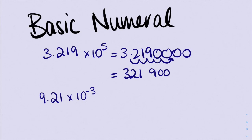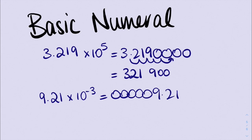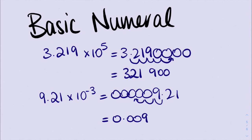And for the second one, we can see that our 10 is to the power of a negative number. That tells us we're moving our decimal place forward, so we're going to put our extra zeros out the front before we start. That negative 3 tells me I'm moving my decimal place forward three places: 1, 2, 3 — and that's where we're going to end up. So we have 0.00921 as our final answer. And that is how we convert back into basic numerals.